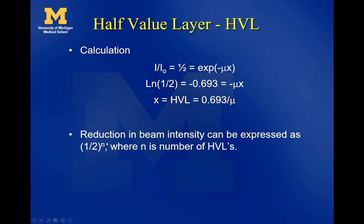A useful shortcut: the reduction in beam intensity can be expressed as (1/2)^n, where n is the number of half value layers. So if you know how many HVLs you have, just raise one half to the nth power to find the intensity reduction. For example, two HVLs gives (1/2)² = 1/4 — the beam is reduced to a quarter of its original intensity.